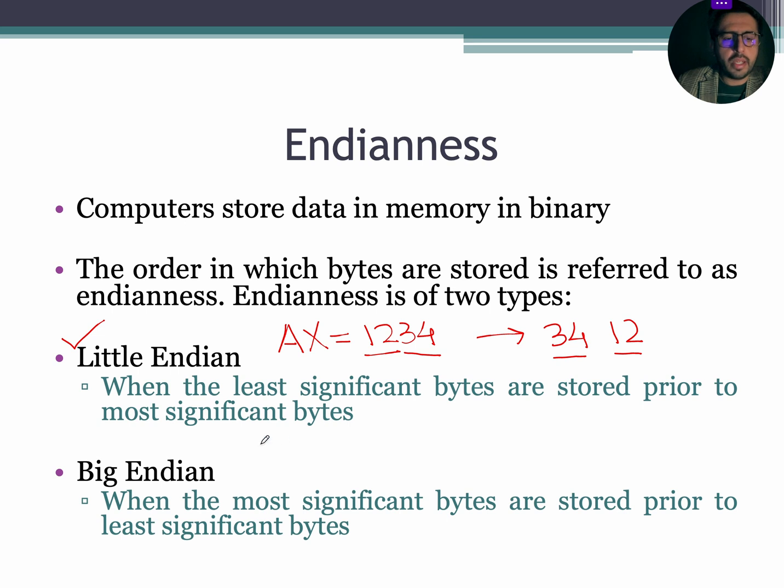On the other hand, when the most significant bytes are stored prior to the least significant bytes, then this type of mapping is called big-endian. For this, if AX is equal to 1234, then in memory, the data stored will be same as register, that is 1234. So over here, the most significant byte is stored prior to the least significant byte.